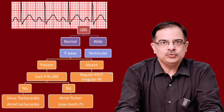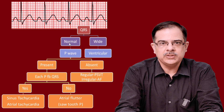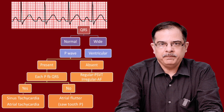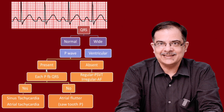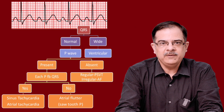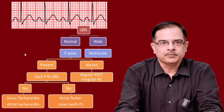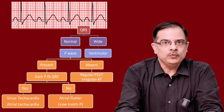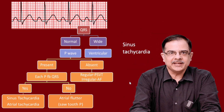First tachyarrhythmia example: RR interval is less than 15 mm — tachyarrhythmia confirmed. Step one: QRS complex is 2 mm — normal. Step two: P waves are present. Step three: each P is followed by QRS — yes. It could be sinus tachycardia or atrial tachycardia. Assuming lead two, the P wave is positive and consistent throughout the ECG. Therefore the diagnosis is sinus tachycardia.